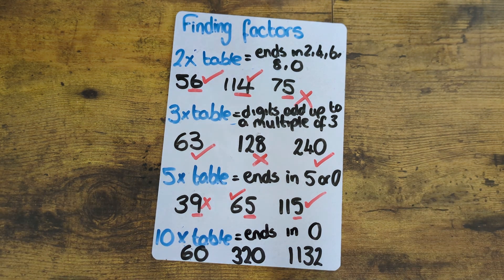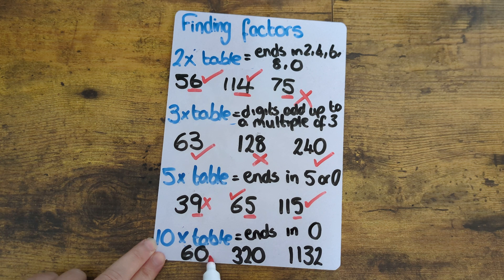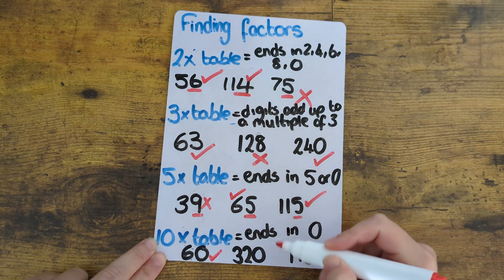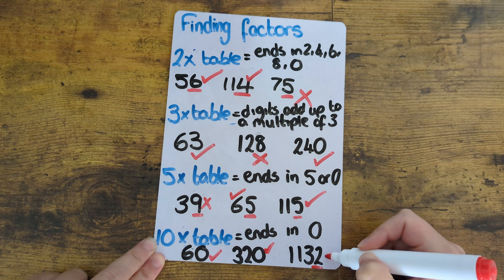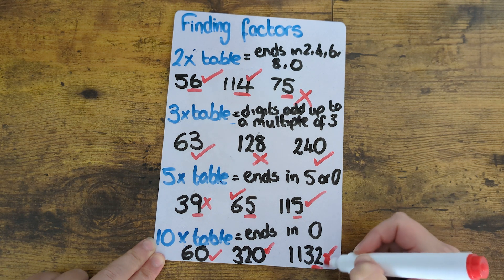So 60 ends in a zero that will be in the ten times table. 320 also ends in a zero but 1132 ends in a two so that will not be in the ten times table.